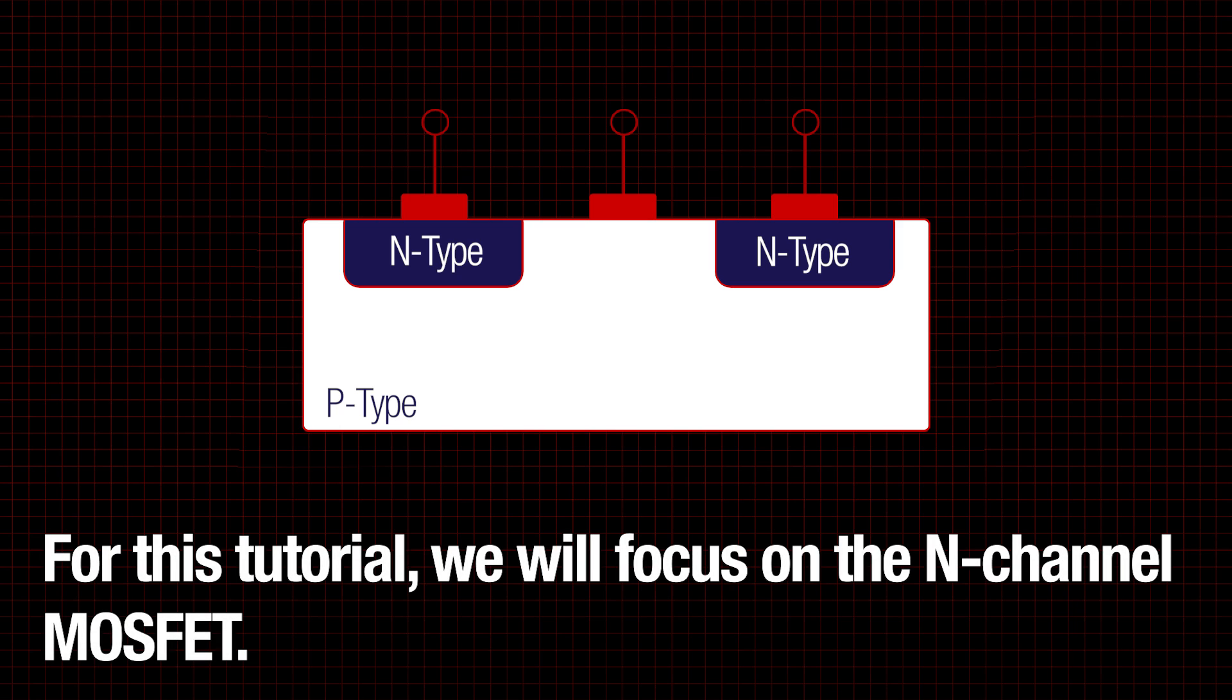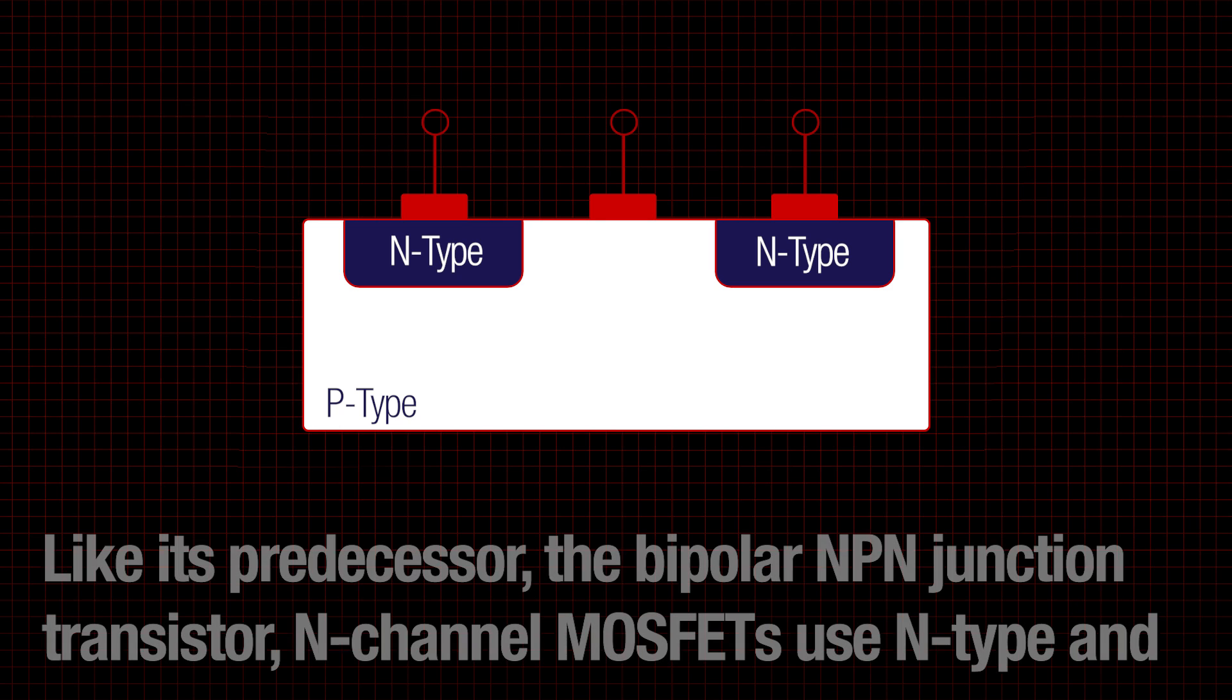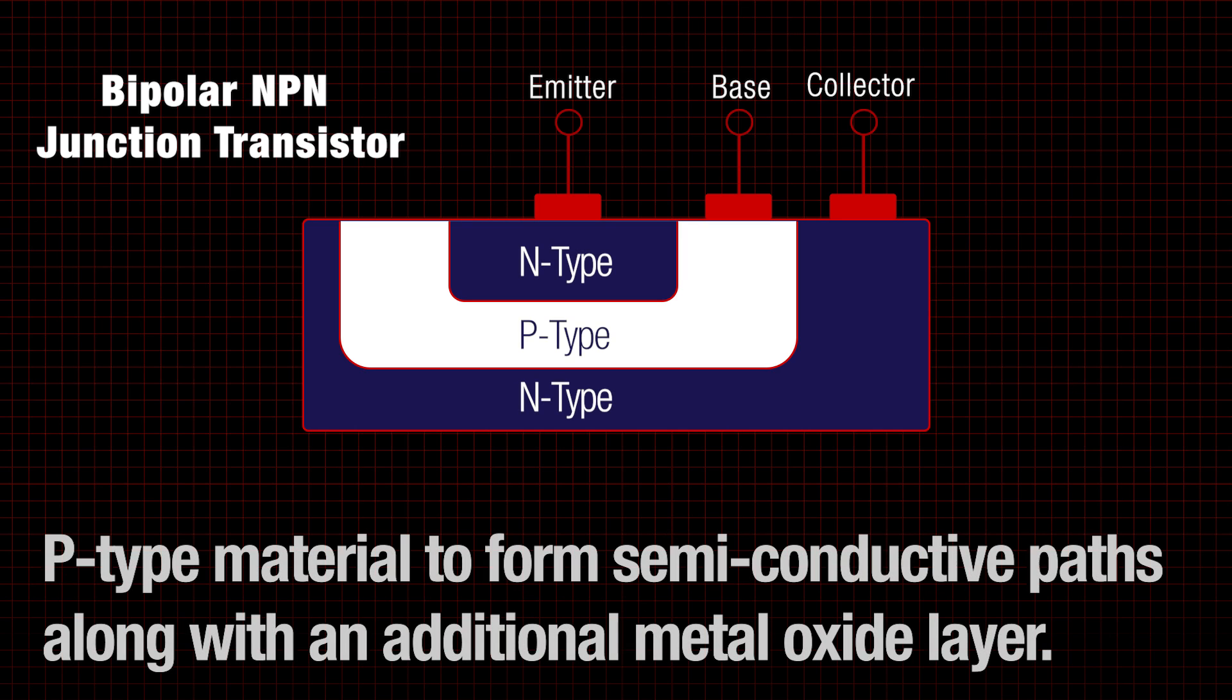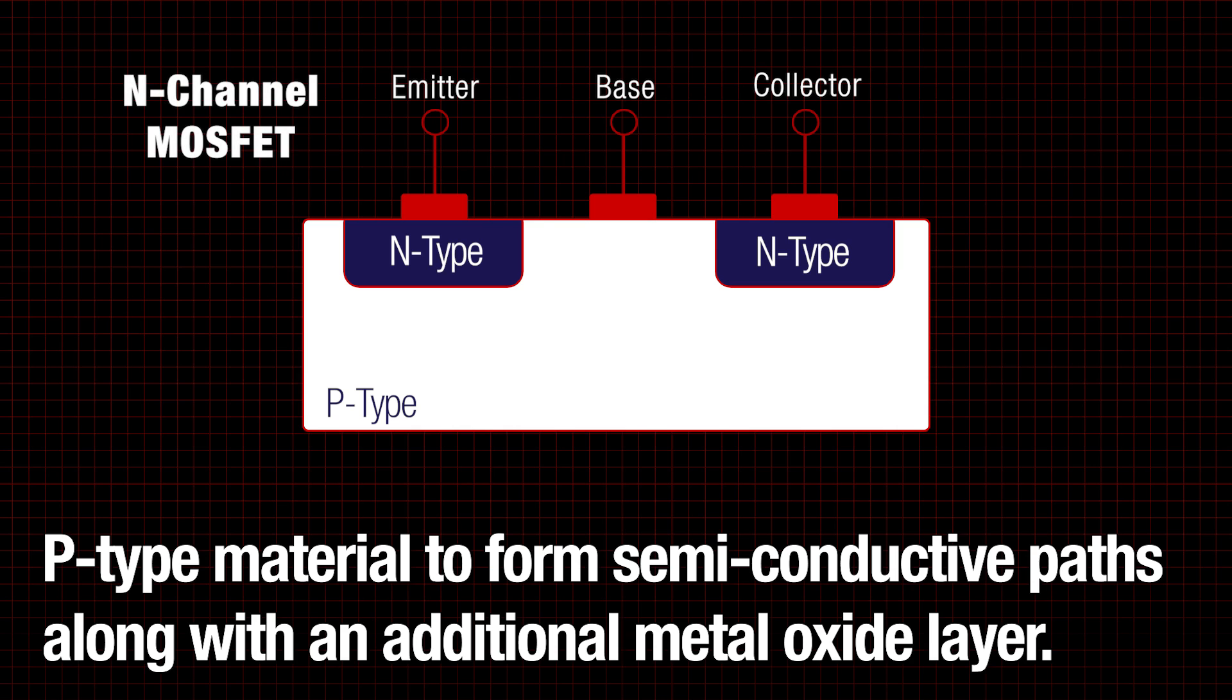For this tutorial, we'll focus on the n-channel MOSFET. Much like its predecessor, the bipolar NPN junction transistor, n-channel MOSFETs use n-type and p-type material to form semiconductive paths along with an additional metal oxide layer.